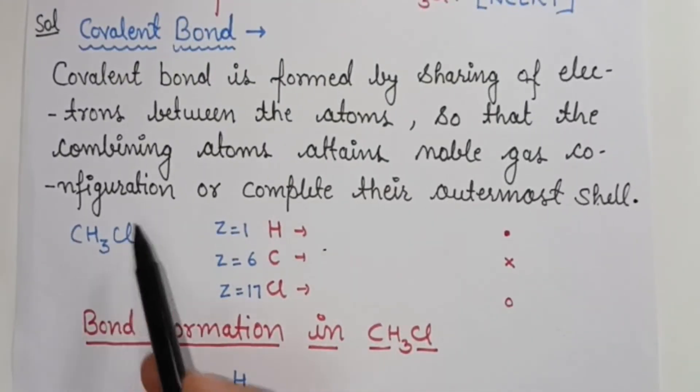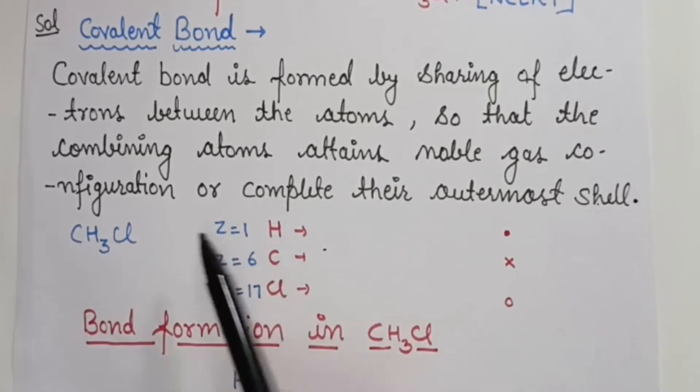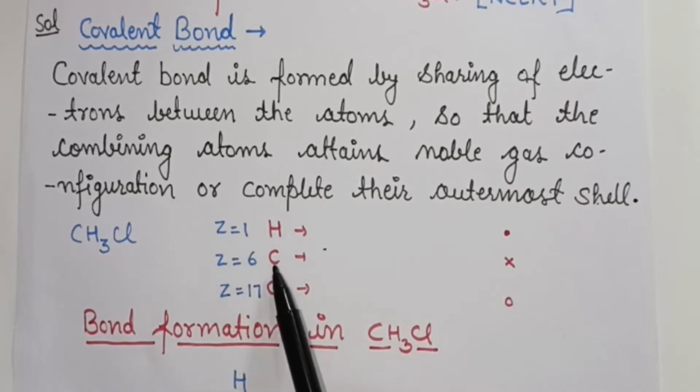Let's take an example of bond formation in CH3Cl. There are three atoms involved: carbon, hydrogen and chlorine. Atomic number of hydrogen is 1, carbon is 6, and chlorine is 17.